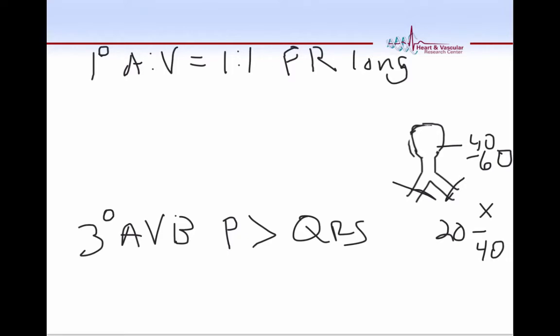Finally, I'm going to talk about the various types of second-degree AV block. And in second-degree AV block, there are more P waves than QRSs, but there is a relationship between the P waves and the QRSs. That is to say, some of the P waves conduct. So in first-degree AV block, all of the P waves conduct. In third-degree AV block, none of the P waves conduct. In second-degree AV block, some of the P waves conduct.